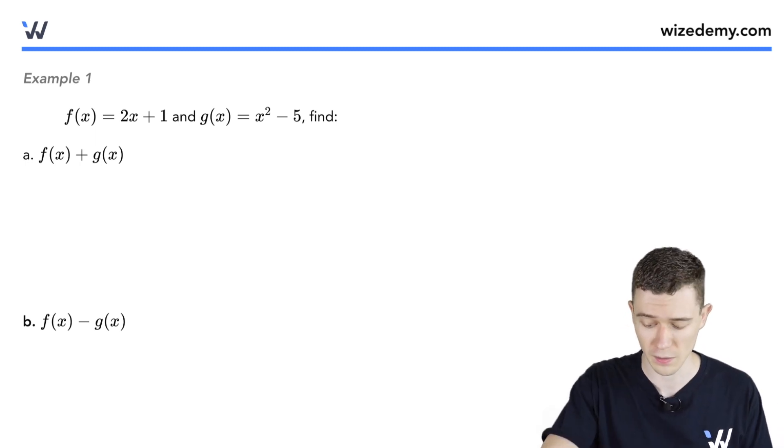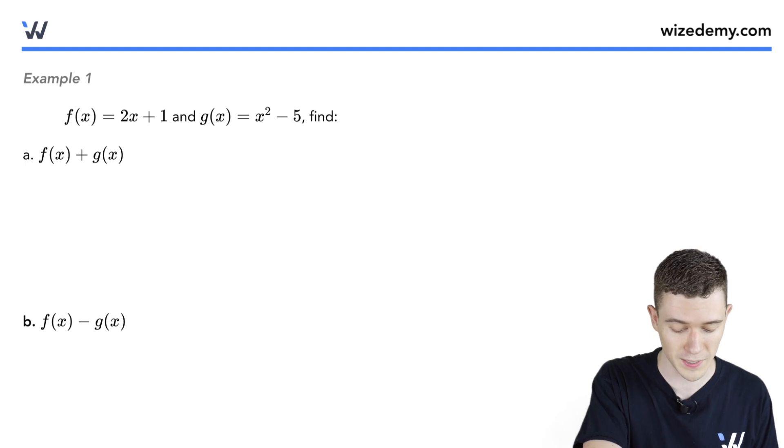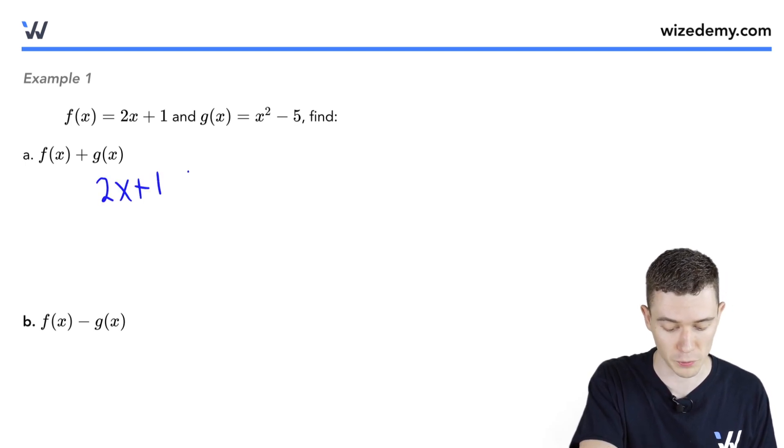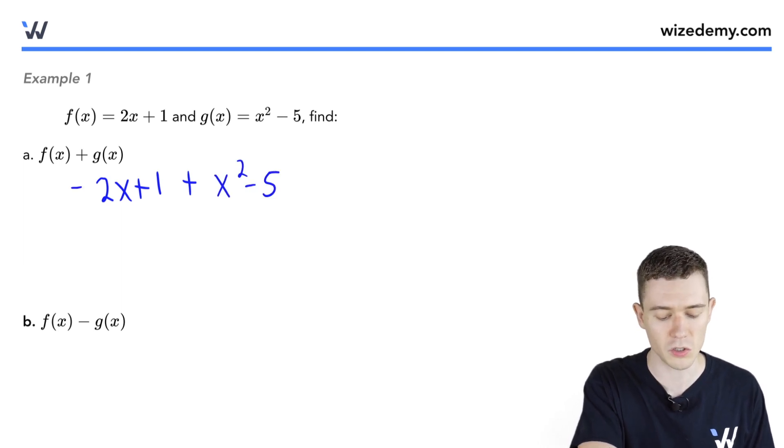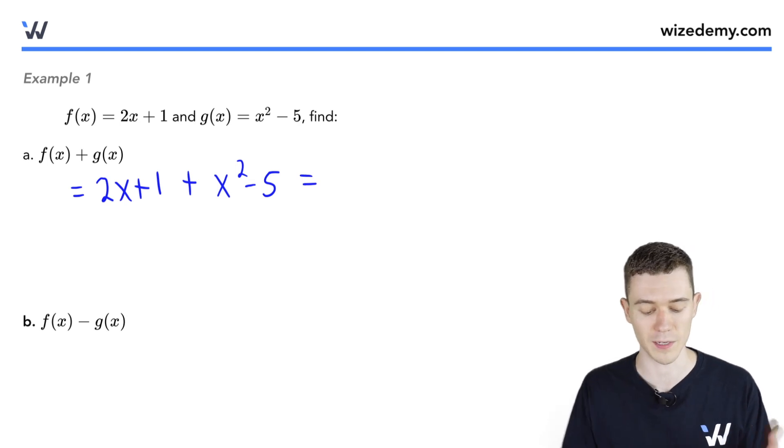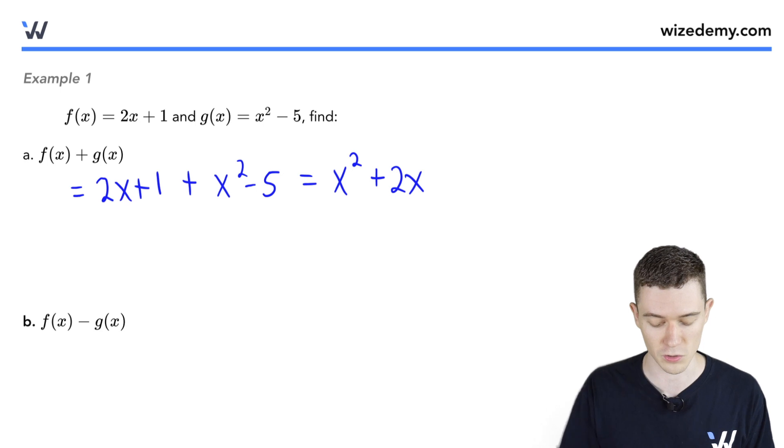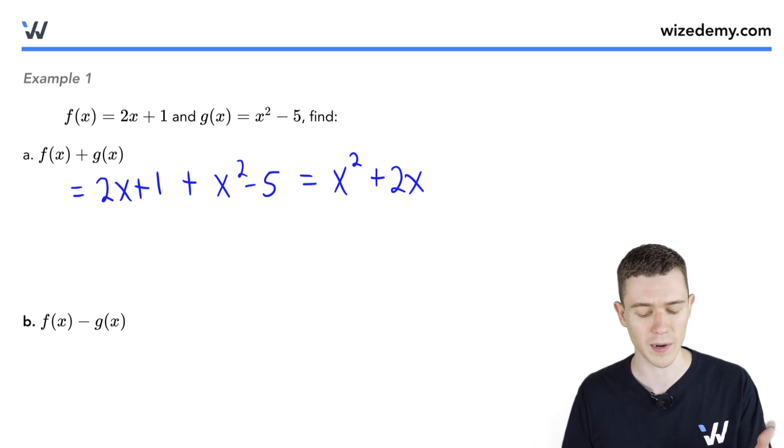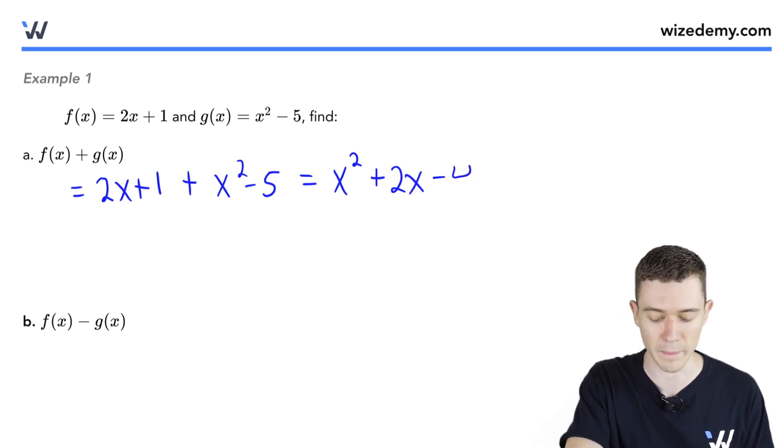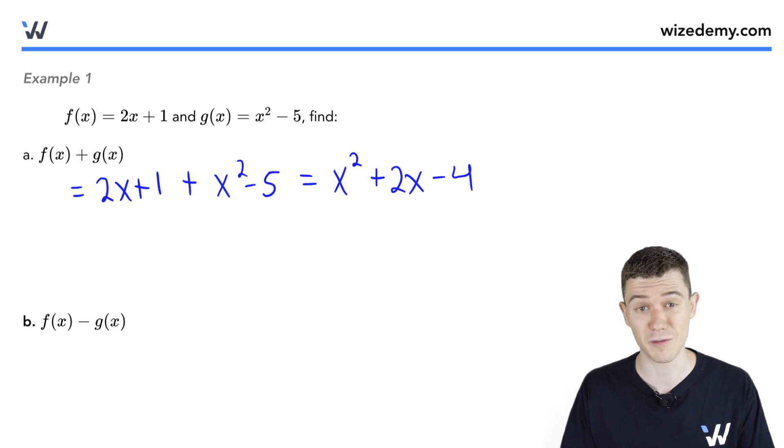Let's find f plus g. We'll simply take the f function, which is 2x plus 1, and put a plus sign between them. We'll write the g function, x squared minus 5. The only thing to do here is to combine some like terms. There's only one x squared. Typically we write this in decreasing order of exponents. I only see one other factor of x, 2x, and then we can combine 1 minus 5, make that minus 4, and we found f plus g.